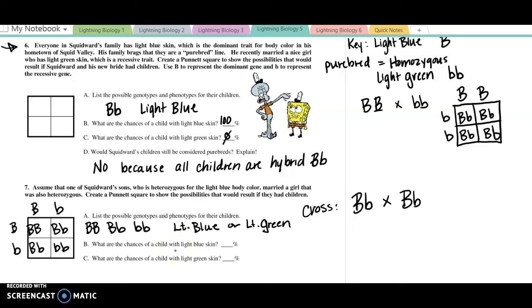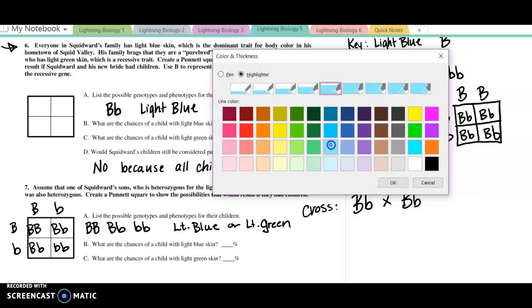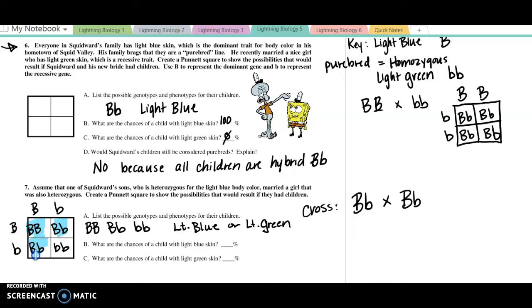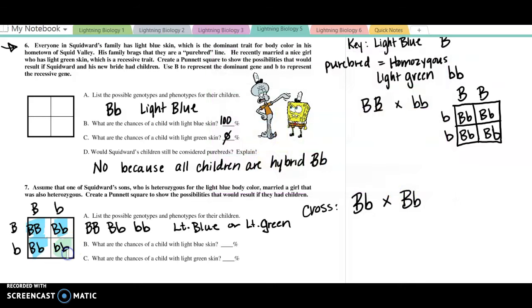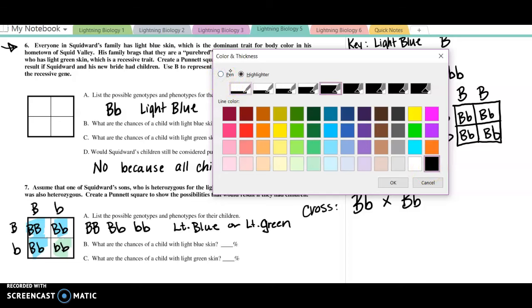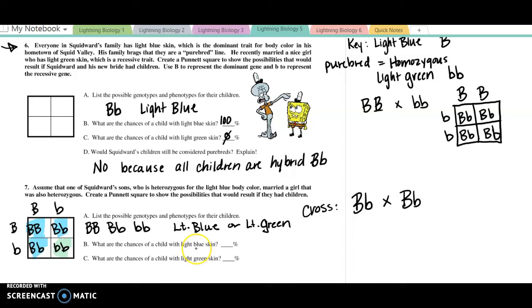What are the chances of a child with light blue skin? Light blue skin, I'll highlight that in. This one's going to be light blue, light blue, and light blue. That other one is going to be light green. Going back to question B, what are the chances of a child with light blue? Well, 3 of 4. 3 out of 4. 3 over 4 is actually 75%. I don't care which way you write that. What are the chances of a child with light green? This one's going to be 1 fourth, and 1 fourth is 25%.